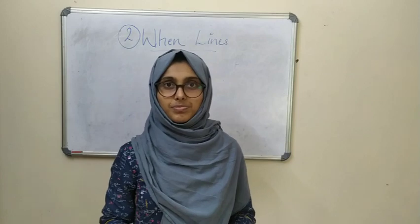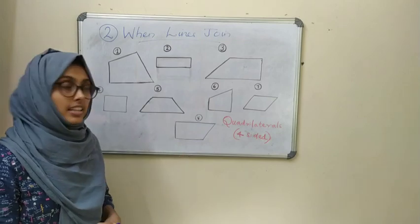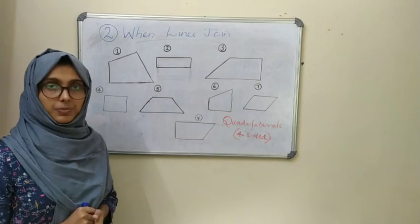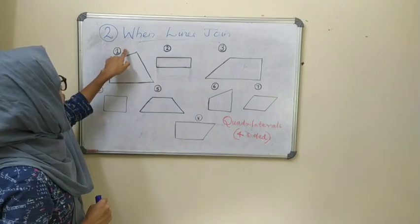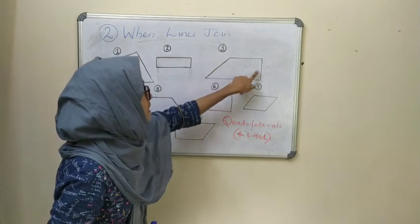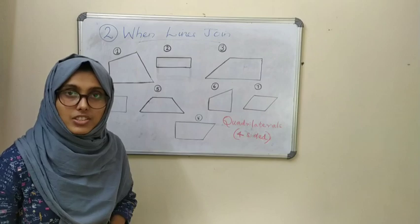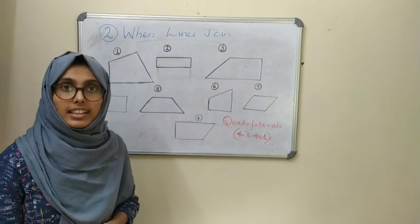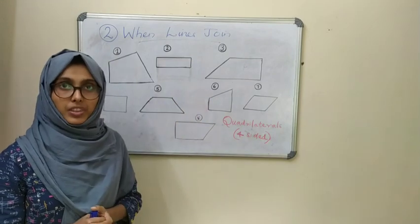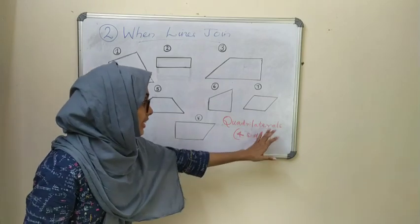Now look at some figures on the board. Every figure you can see is four-sided — for example, one, two, three, four: four sides. These figures in which four sides are present are called quadrilaterals. Any figure which has four sides is called a quadrilateral.